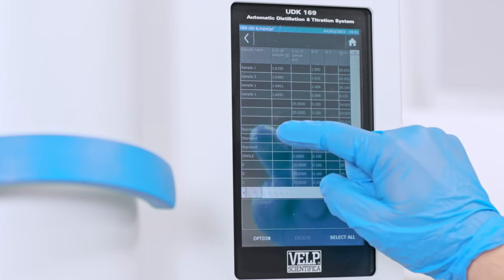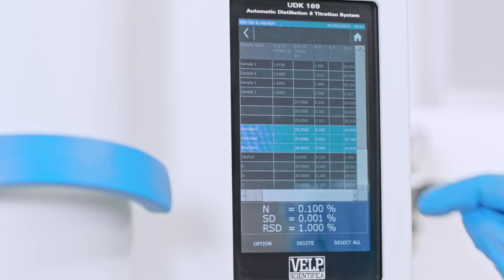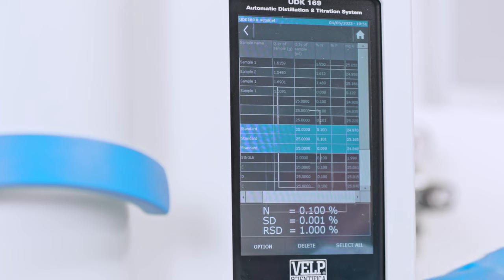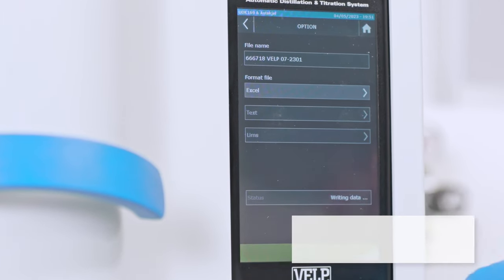The UDK169 stores the analysis results in the onboard archive. Export data to a PC and LIMS in multiple formats via USB or Ethernet.